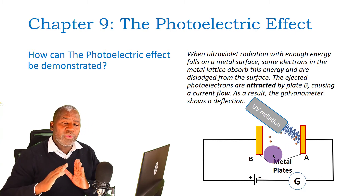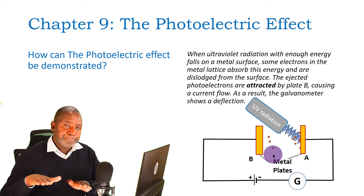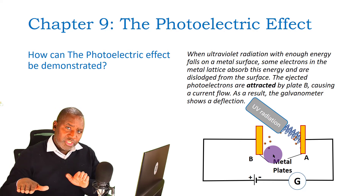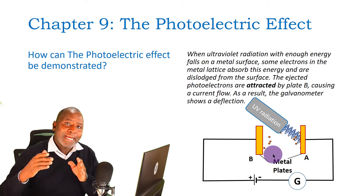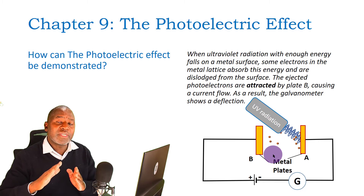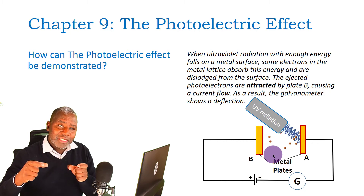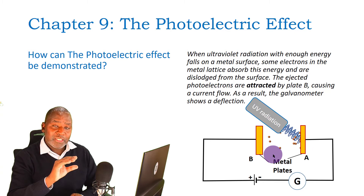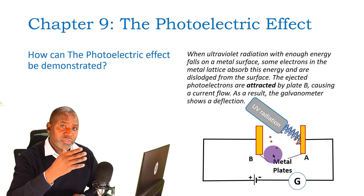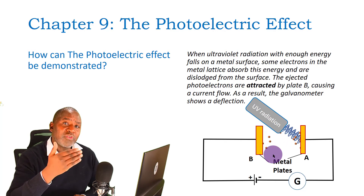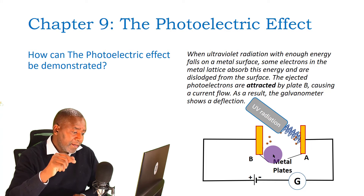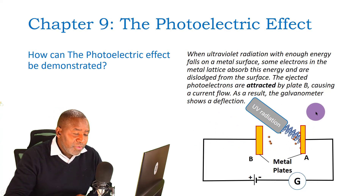Let's look at the second experiment, where we use an electroscope. We use two electroscopes — one positively charged and one negatively charged. On top of each we place a clean zinc plate, cleaned by rubbing with sandpaper to remove the oxides on the surface. We then irradiate the zinc with a sodium vapor lamp, which produces UV, and we expect it to remove electrons from the zinc plate. Let's look at a simulation to understand what happens to each electroscope.